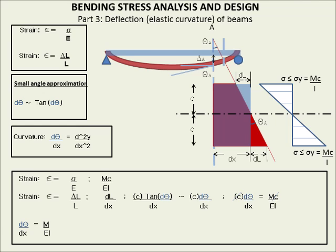Looking at our third mathematical object, d_theta/dx is curvature — how we define the rate of change of slope of the beam. So we can write M over EI as the second derivative of Y, where Y is the vertical displacement. This is essentially what the elastic curvature of beam theory is.